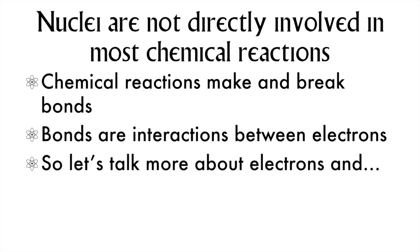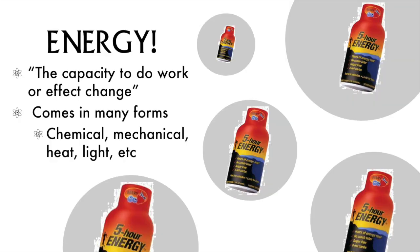I'll tell you how electrons work in a simple way. Remember that the universe is made of matter and energy. To understand how electrons work, we need to talk about energy. The definition of energy is the capacity to do work or affect change. Energy comes in a variety of forms including chemical energy, mechanical energy. I've mentioned radioactive decay as one form. Heat and light are both forms of energy.